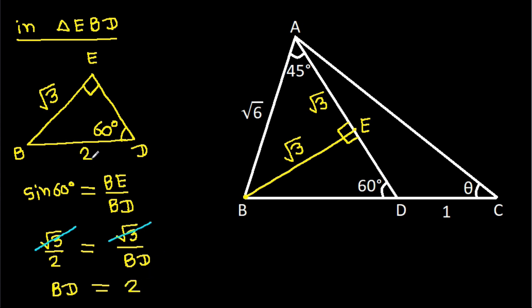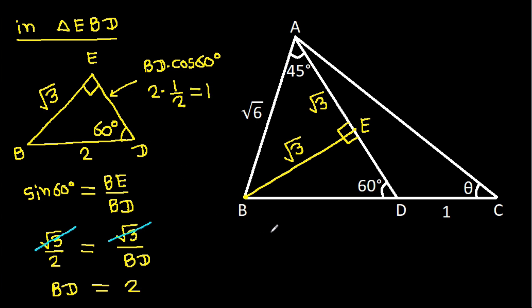BD is 2. And DE will be BD × cos 60° = 2 × (1/2) = 1. So DE is 1.